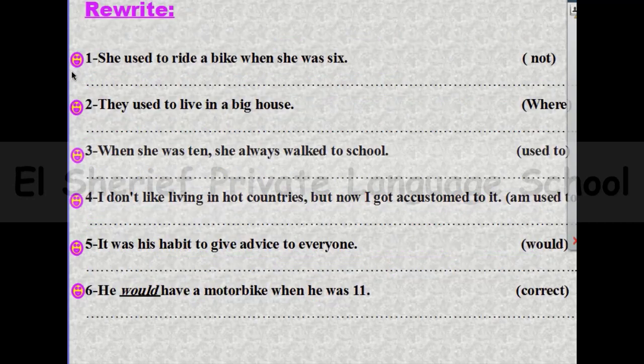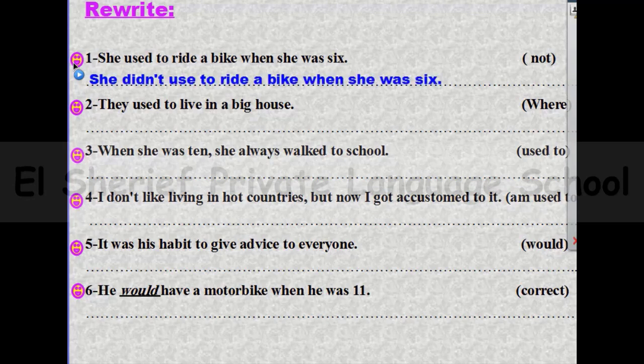Let's answer these questions. Number one: she used to ride a bike when she was six — make it negative. The answer will be: she didn't use to ride a bike when she was six.